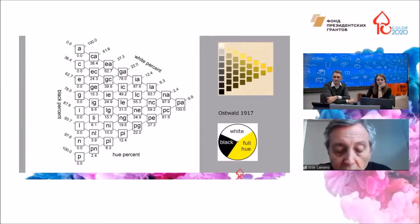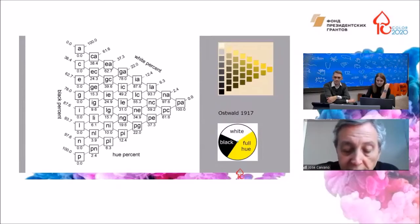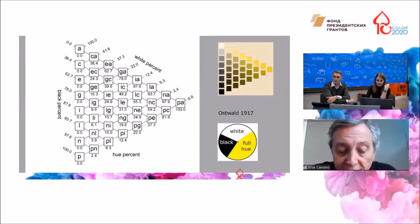Ostwald uses the same method, spinning disks with three radial sectors: black, white, and a pure hue or full color. By this way and following psychophysical scales, he calculated and obtained the intermediate colors in each monochromatic triangle around the cycle of hues.